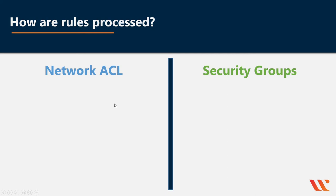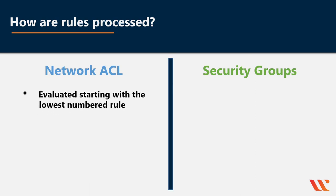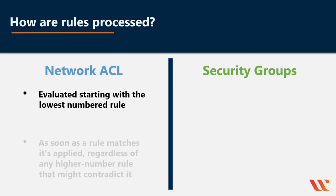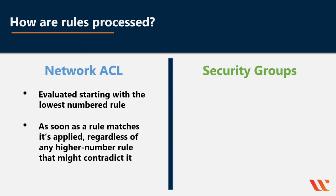Another differentiator between network ACLs and security groups is how the rules are processed. With a network ACL, they are evaluated starting with the lowest numbered rule. As soon as a rule matches, it's applied, regardless of any higher numbered rule that might contradict it.